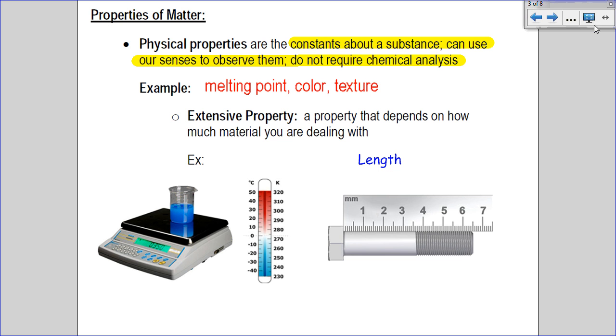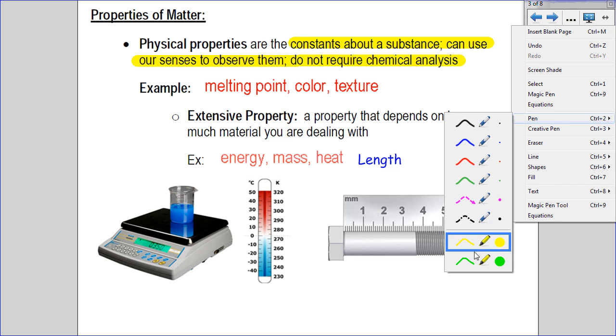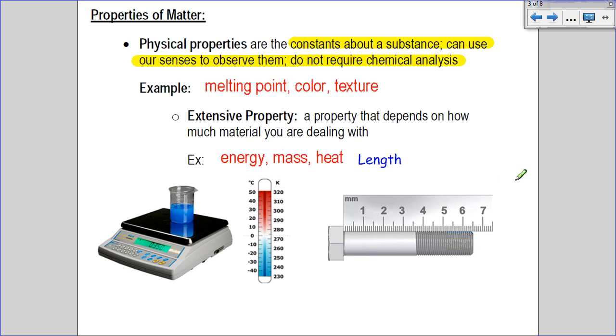Now an extensive property is something slightly different. An extensive physical property is a property that depends on how much stuff you're dealing with. If you have one grain of sand, you're still talking about sand, or you're talking about an entire bag of sand. Extensive properties are things like heat, mass, energy, length—things that you measure with a ruler or a scale or a thermometer. Those are the extensive properties.